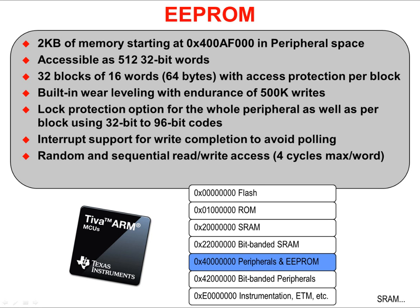This protection is also available at the module level. The memory has an endurance of 500,000 writes with built-in wear leveling. When writing to Double EEPROM from code, write completion can be assured either through polling or with an interrupt. Random read-write access to Double EEPROM requires 4 cycles per word. Sequential writes require the same amount for the first access, and then single cycle for each one afterwards.